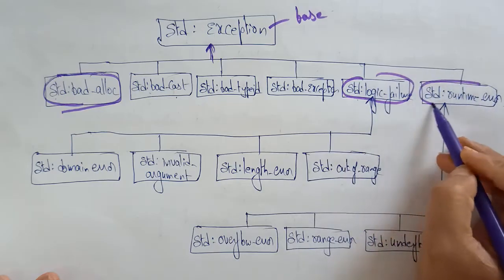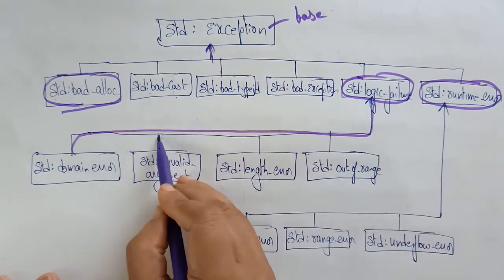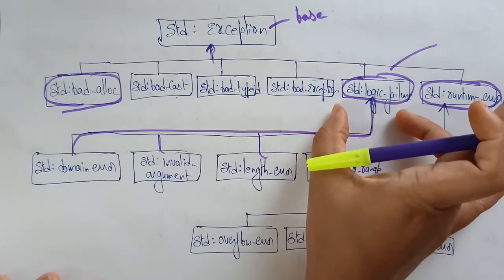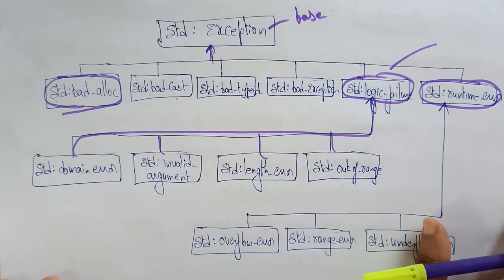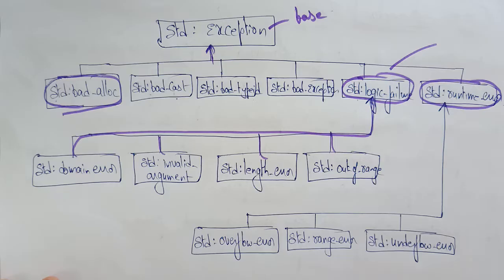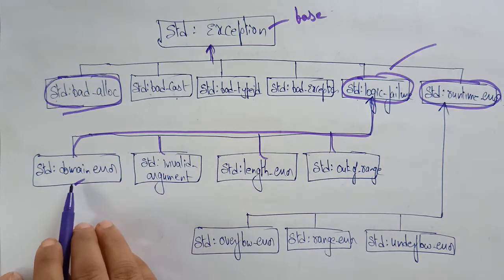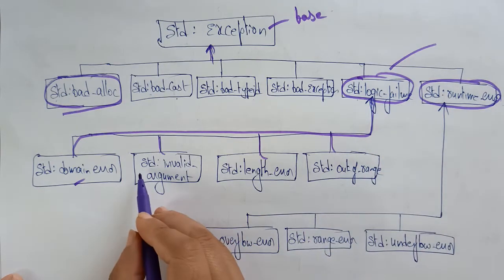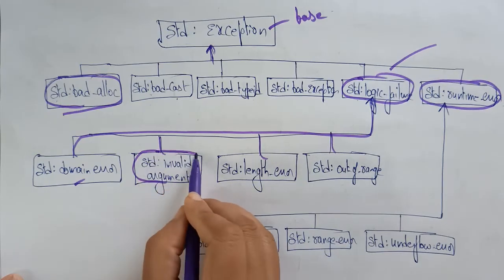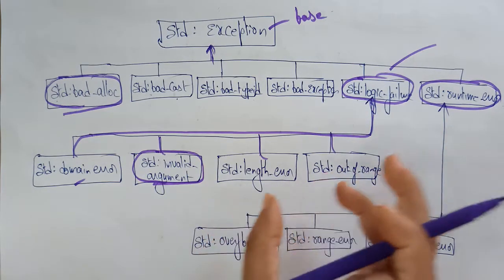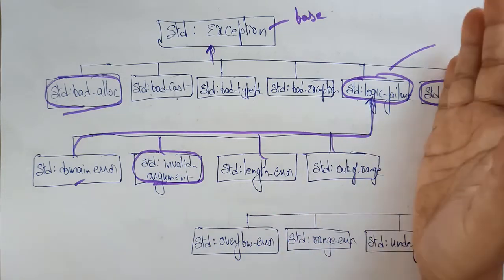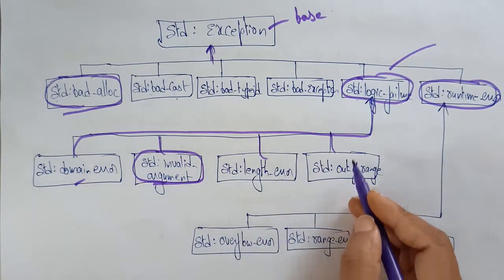Logic failure and runtime error each act as a parent for remaining exceptions. Logic failure covers: domain error, invalid argument, length error, and out of range — these all come under the category of logic failure. Whenever you get these exceptions, they represent a logic failure.